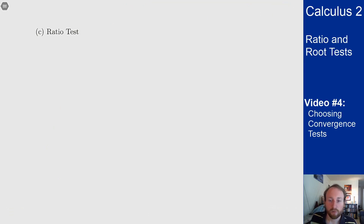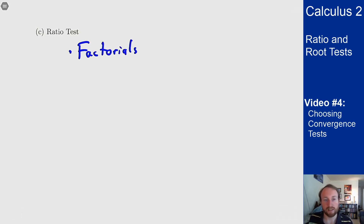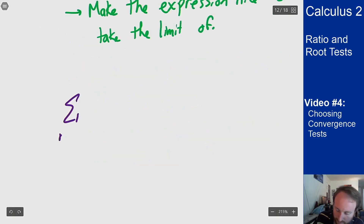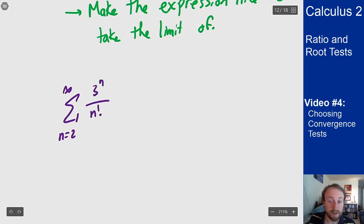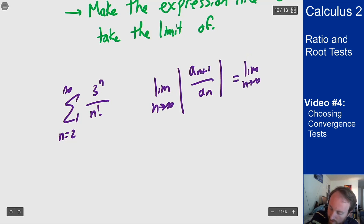Next is the ratio test. Look for factorials — that's a big indicator you should use the ratio test. You can also think about polynomials and numbers raised to powers of n, as those cancel nicely when you divide consecutive terms. For example, the sum from n=2 to infinity of 3^n / n! is a great candidate. Setting up the limit a_{n+1}/a_n gives the limit as n→∞ of 3/(n+1), which goes to 0 — less than 1, so the series converges.